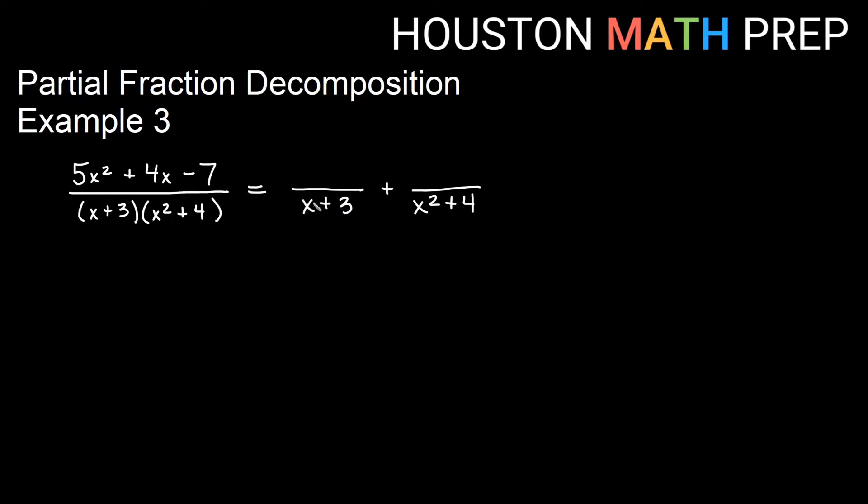This first one I need all terms below x term. That would just be a constant. Since this starts with x squared I would need all powers below x squared which would be an x term and a constant. So that's our setup, A on the top of the first one and Bx plus C on top of the second one.